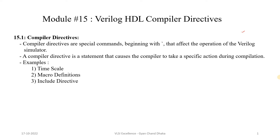So now let's get started. Compiler directives are statements that cause the compiler to take a specific action during compilation. When we write RTL HDL code and compile it, if there are any compiler directives included in our RTL file, the Verilog compiler takes specific actions pertaining to those directives. Compiler directives execute before the real compilation stage — that is, during the preprocessing stage.